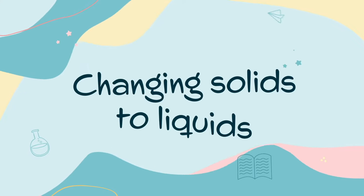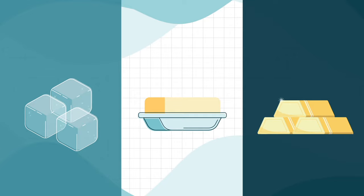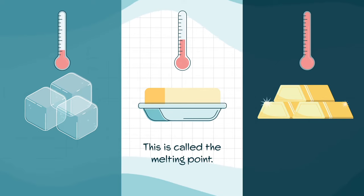Changing solids to liquids. When you heat some solids they melt and become liquid. Different materials melt at different temperatures. This is called the melting point.